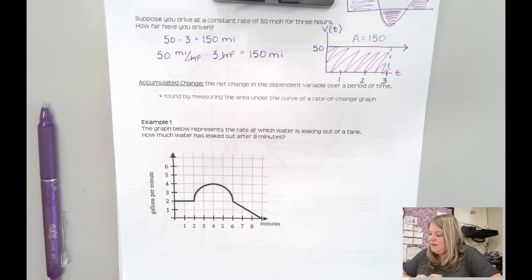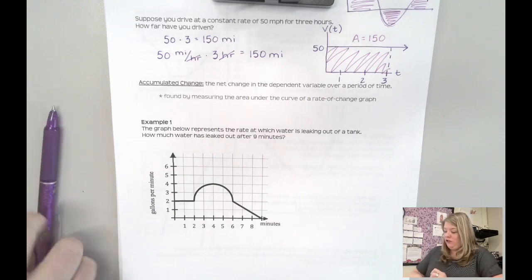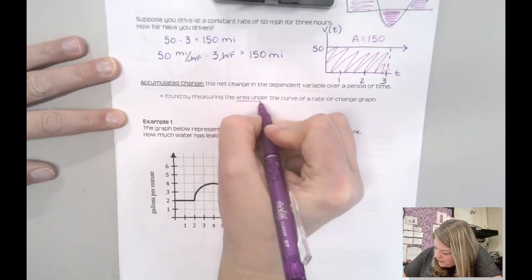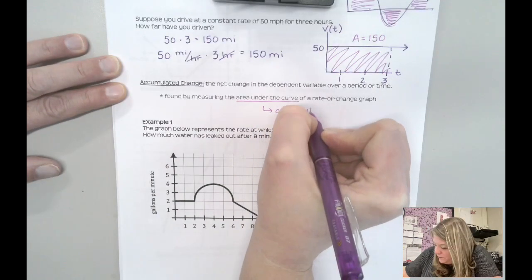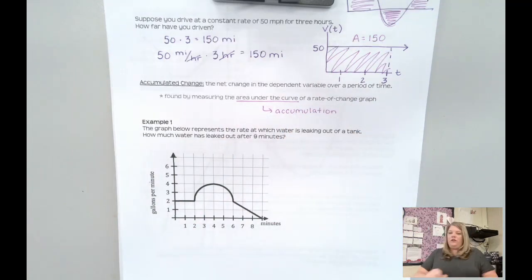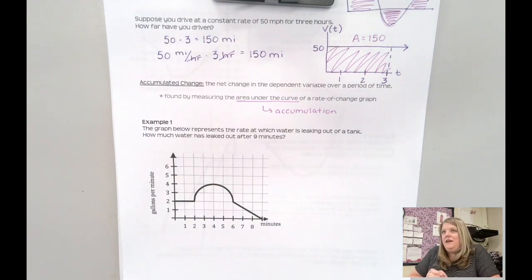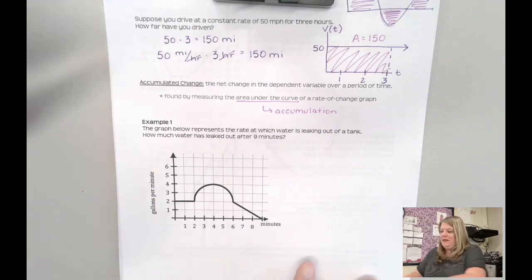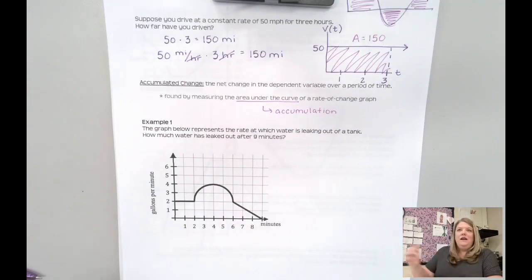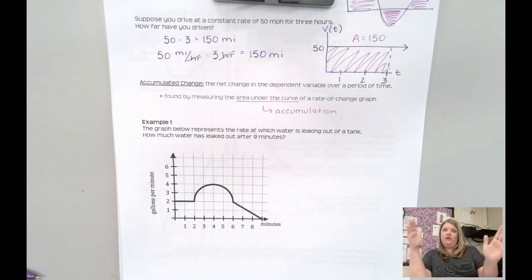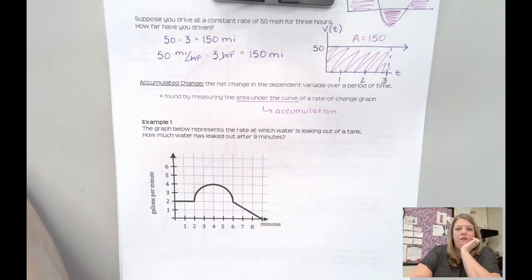Accumulated change is the net change in the dependent variable over a period of time, found by measuring the area under the curve of a rate of change graph. Area under the curve always measures accumulation. It's net change — so when we were talking velocity and position, what this would give you is a displacement. When I said you would have that negative velocity area and you're going backwards, your beginning position versus your ending position would backtrack some.